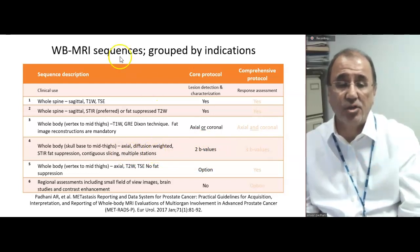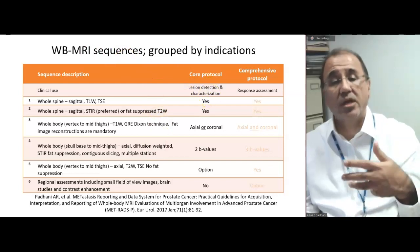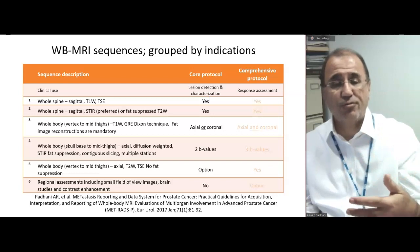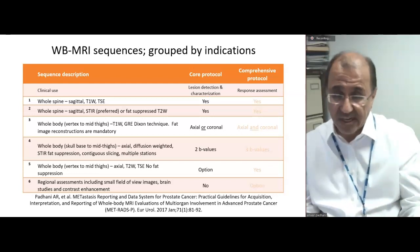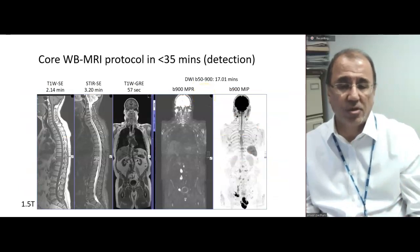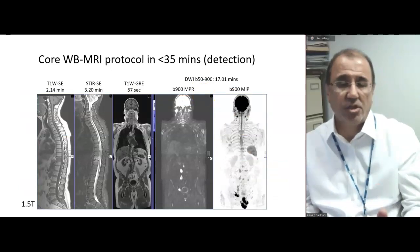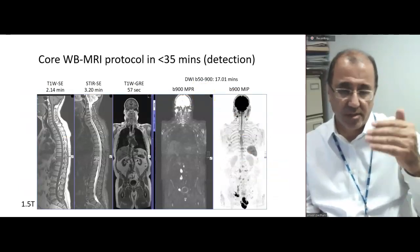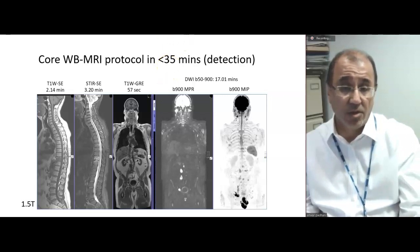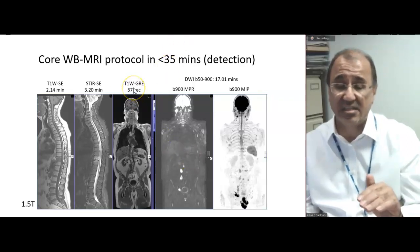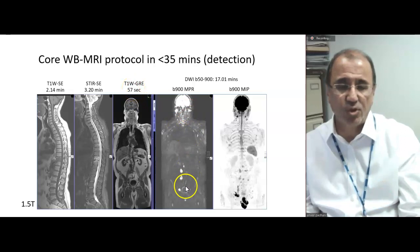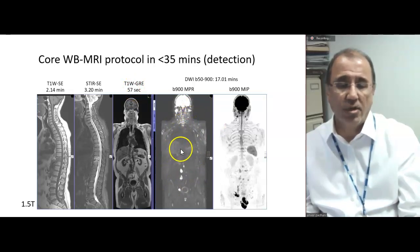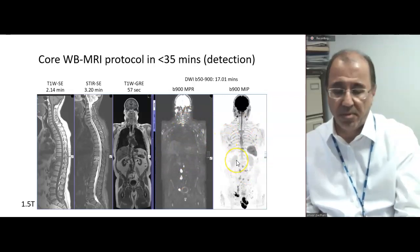The core protocol is used for detection and characterization, and it's the protocol we usually use for multiple myeloma for disease detection. Here's a typical core protocol: sagittal T1, STIR, coronal Dixon technique — the whole body in 57 seconds. Diffusion sequences across four stations are reconstructed here as a coronal DWI and as a MIP sequence.